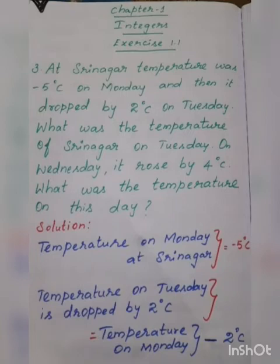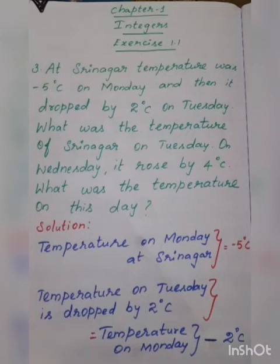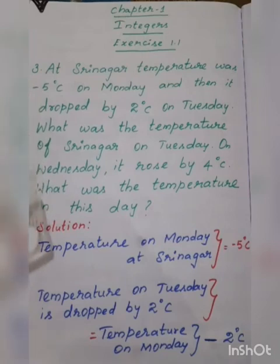At Srinagar, temperature was minus 5 degrees Celsius on Monday and then it dropped by 2 degrees Celsius on Tuesday. What was the temperature of Srinagar on Tuesday? On Wednesday, it rose by 4 degrees Celsius. What was the temperature on this day? Two questions: what was the temperature on Tuesday and what was the temperature on Wednesday?